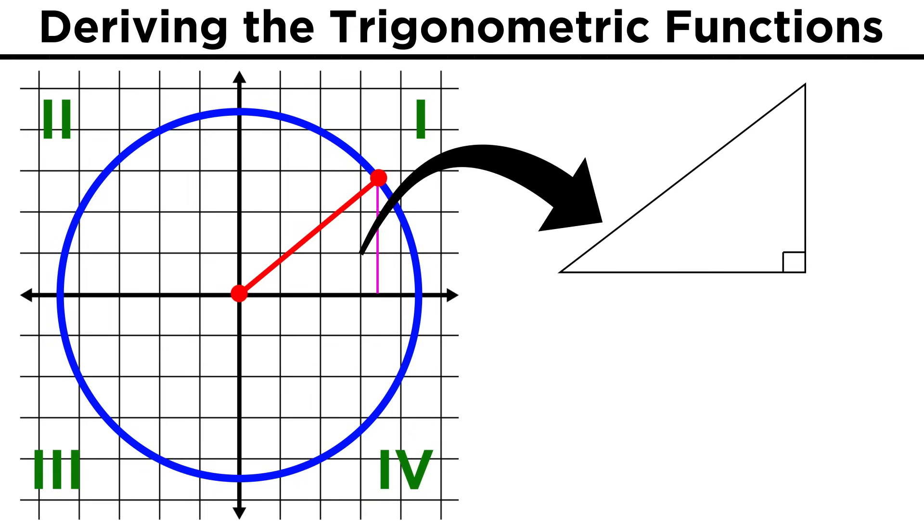This will always be a right triangle, with an X leg and a Y leg, and the radius as the hypotenuse. If these terms are unfamiliar, go back to the geometry tutorials earlier in the series and catch up.